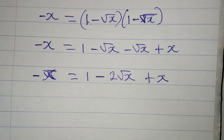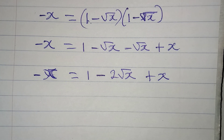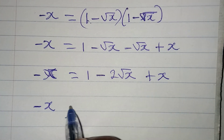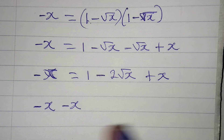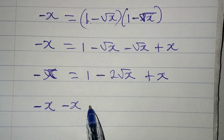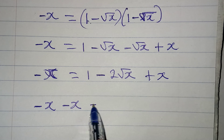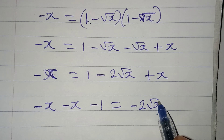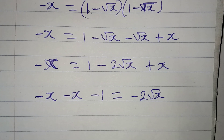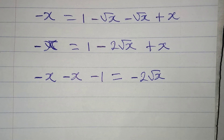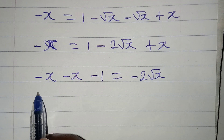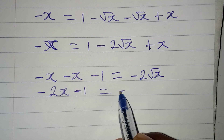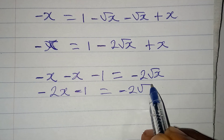Now I want to move everything to the right except -2√x. The +x moves to the left becoming -x, and 1 moves to the left becoming -1. So on the left I have -x - x - 1, which gives -2x - 1, equal to -2√x.